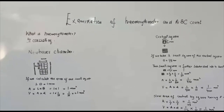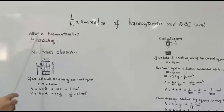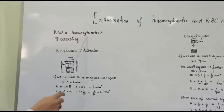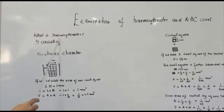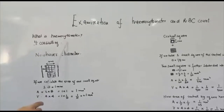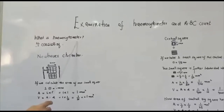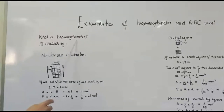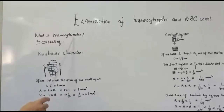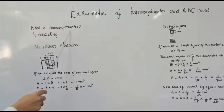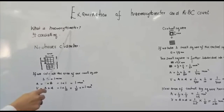First of all, you should know what a hemocytometer is. Heme means blood, cyto means cell, and meter means count. It means it is an instrument that is used to count blood cells.